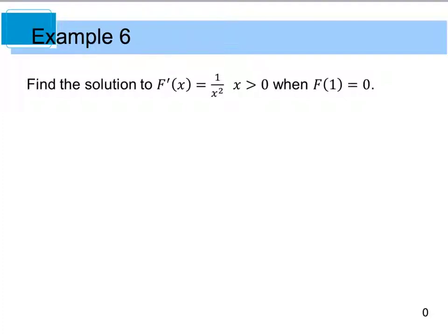So when we look at example 6, it says to find the solution of f prime of x equals 1 divided by x squared, we're only looking at values of x that are greater than 0, and it says when f of 1 equals 0. This f of 1 equals 0 is my initial condition. So this then is going to help me solve for that value of c.